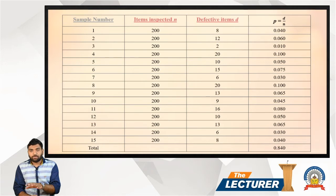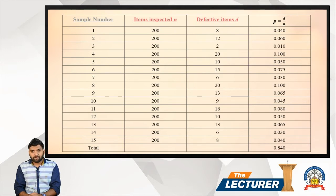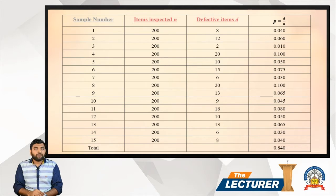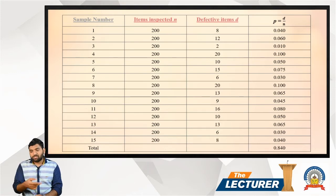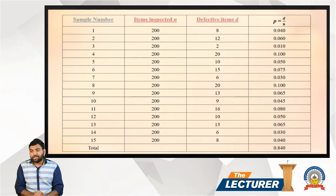The important thing to keep in mind is that p equals defective items divided by item inspected — not item inspected divided by defective items. So for sample number one, the defective item is 8 and item inspected is 200, which is the same for all 15 samples. So p = 8 divided by 200 = 0.040.